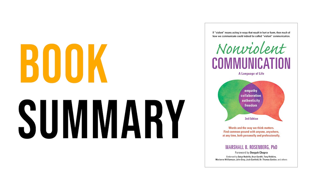Both observations are specific, which reduces the likelihood of a misunderstanding. What's more, they are free of criticism, which prevents the recipient of your message from becoming defensive. Another way of improving observation is to be aware of labeling. If you're distracted by labels, you'll struggle to relate to a specific situation or person. For instance, having the preconception that someone is liberal or conservative may impede your judgment when discussing a certain issue — you've already assumed what this person is thinking.